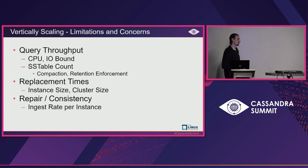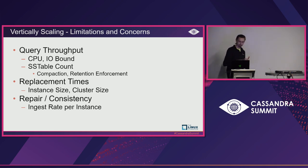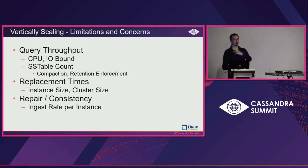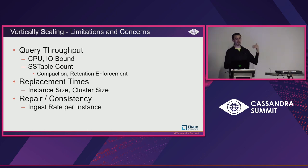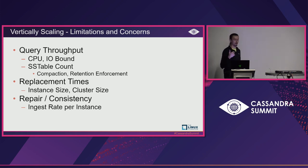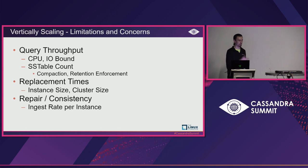Replacement times are another factor — instance size relates to how fast you can copy data. The bigger your instance is, the fewer instances you have to stream the data to your replacing instance. If the replacement time takes too long, you're going to introduce more load on the other servers in your cluster, and if a second server fails, you're introducing even more load that could cascade to where the service becomes unavailable. And for repair consistency — you have to eventually have your data repaired. The more data you ingest, the longer your repairs are going to take, and you might not be able to catch up if there's a hardware failure, since repairs require all nodes to be up and running at the same time.